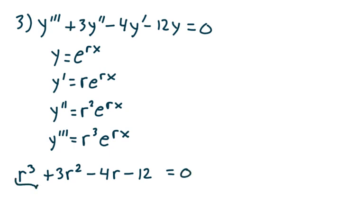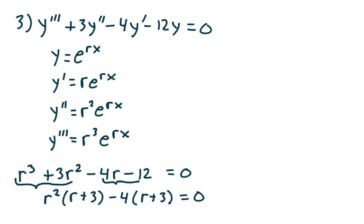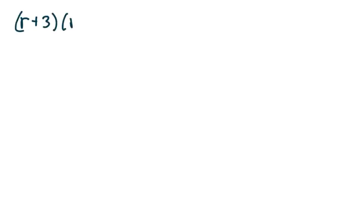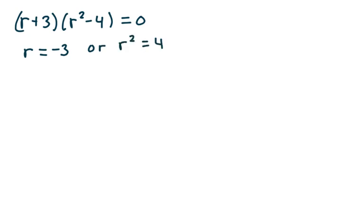We're going to factor by grouping. Looking at the first two terms and taking out an r squared, I get r squared times r plus 3. Then looking at the last two terms and taking out a minus 4, I multiply by r plus 3 and set that to 0. Factoring out r plus 3 and multiplying by r squared minus 4, set to 0. So r equals negative 3, or r squared equals 4, giving r equals negative 3, r equals negative 2, or r equals 2.